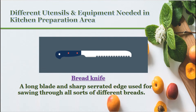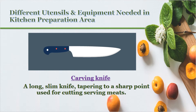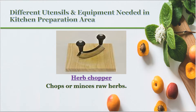Bread knife: a long blade with a sharp serrated edge used for sawing through all sorts of different breads. Carving knife: a long, slim knife tapering to a sharp point used for cutting and serving meats. Herb chopper: chops or minces raw herbs.